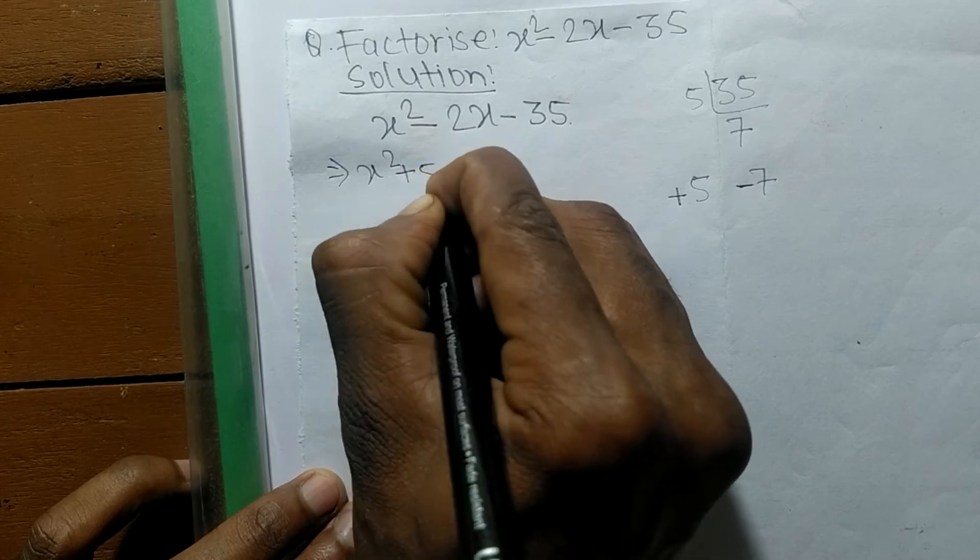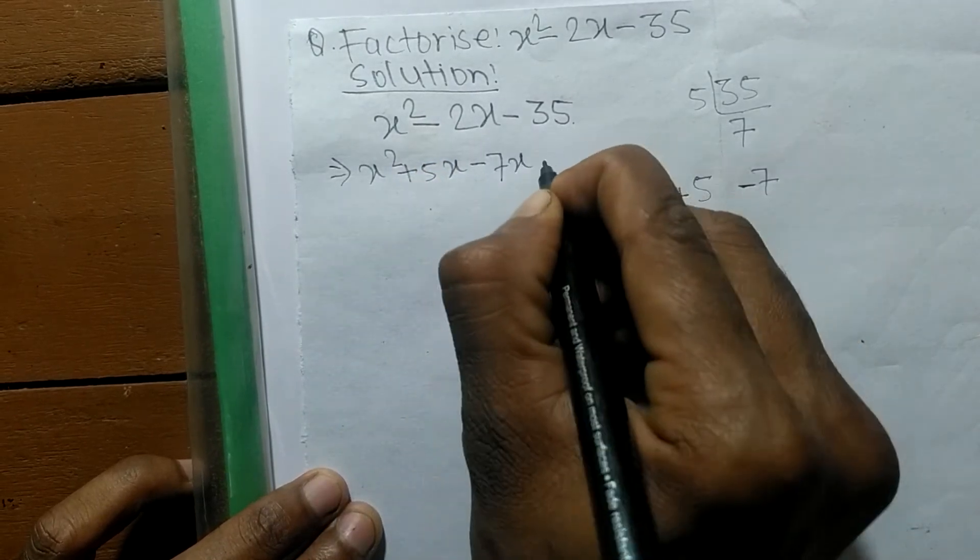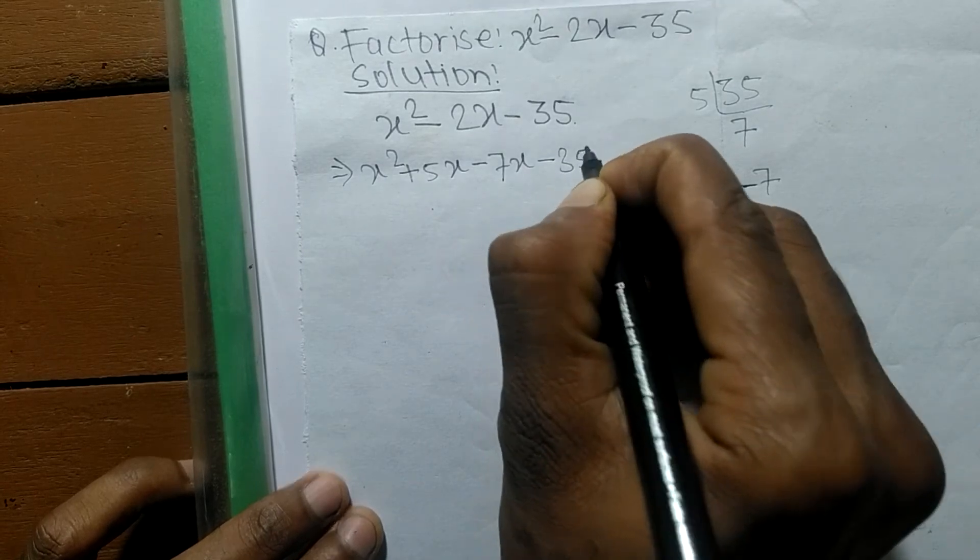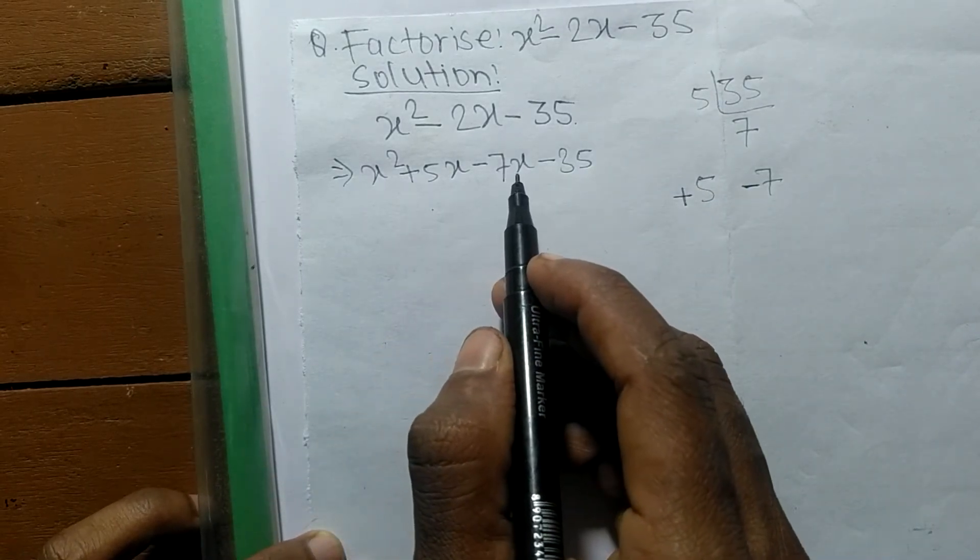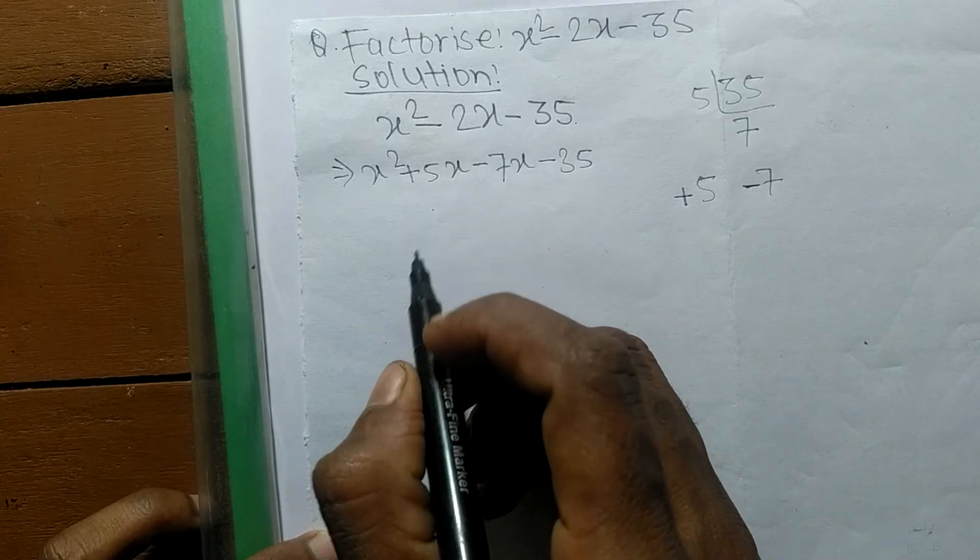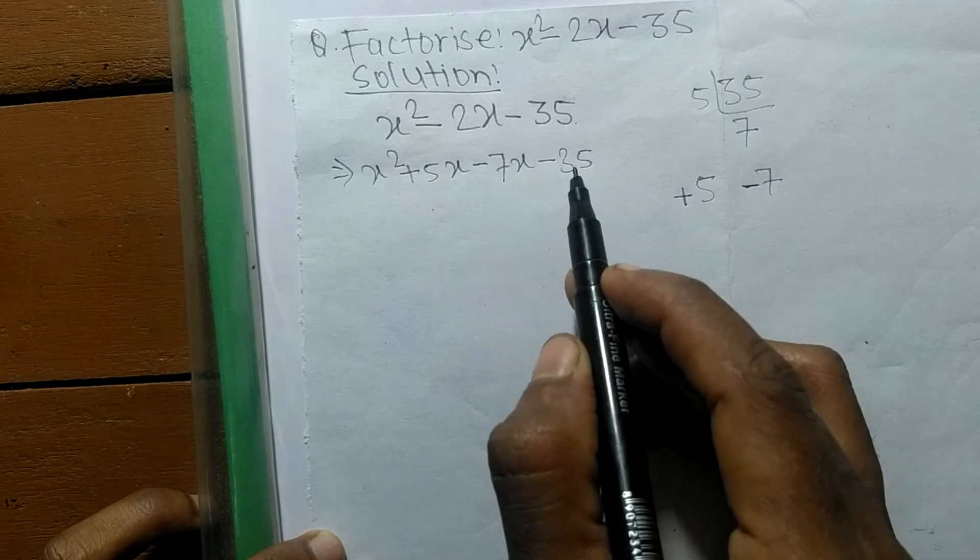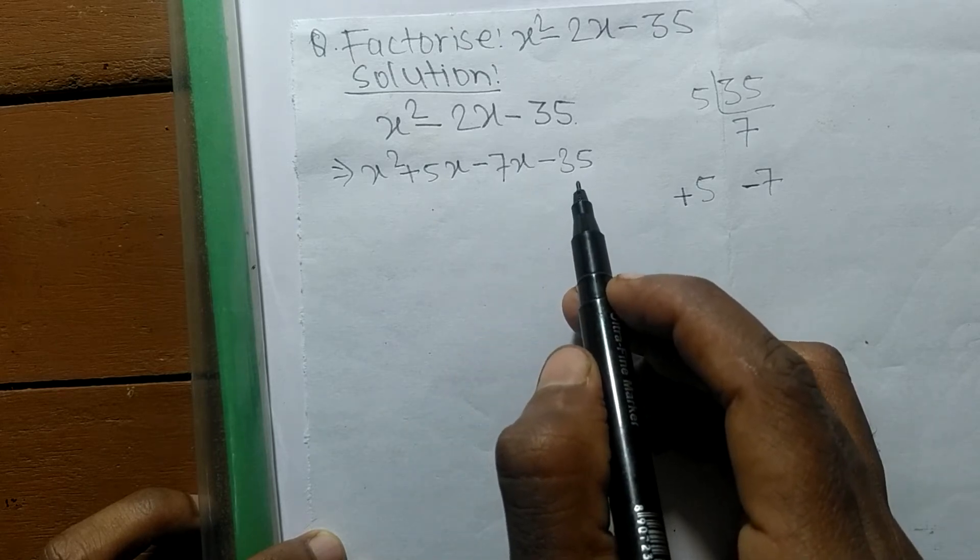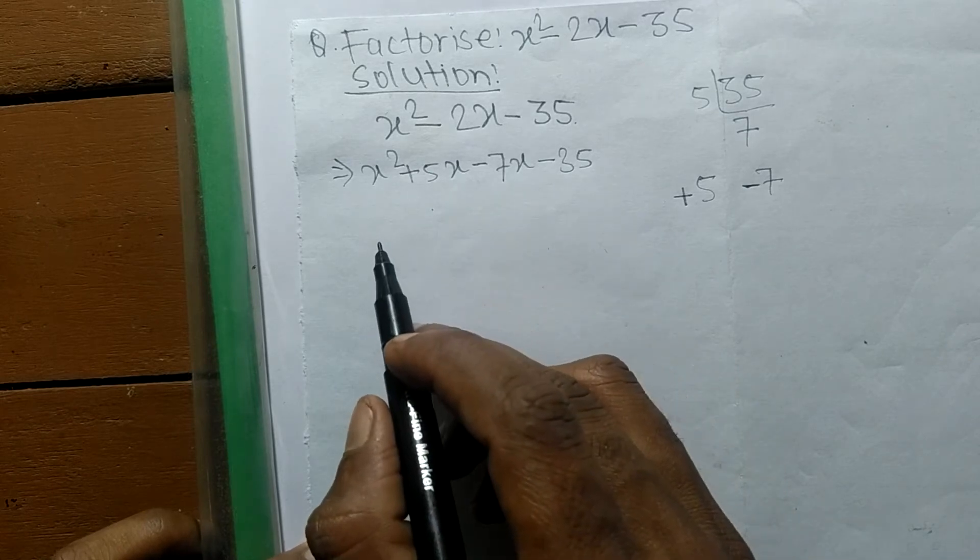Plus 5x minus 7x equals -2x, like the original middle term. And 5 times -7 equals -35. So now we have to separate these expressions into 2 pairs.